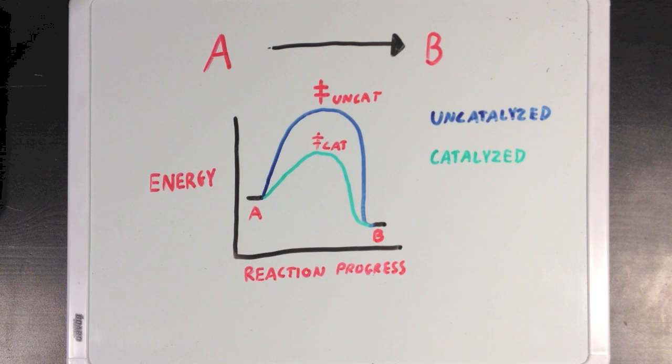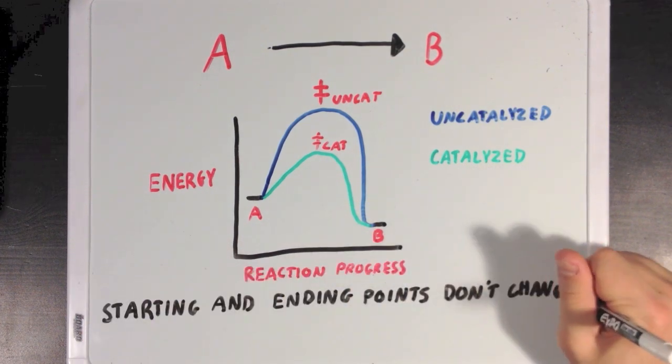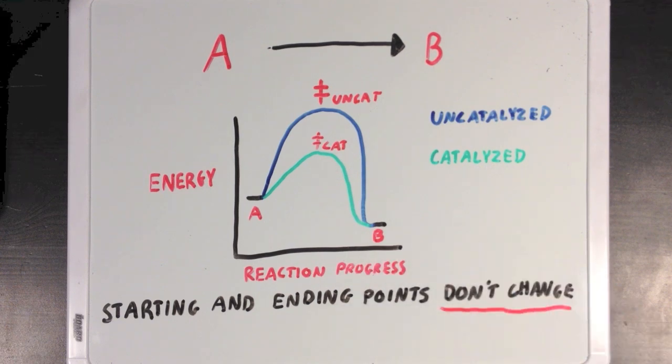Now, it's really important to recognize that like our example where you're trying to climb the hill, the enzyme will not be changing the starting and ending points of the reaction. It doesn't change molecule A or molecule B. Your starting and ending points are always the same, and the only thing that changes is the path that you take to get from A to B.